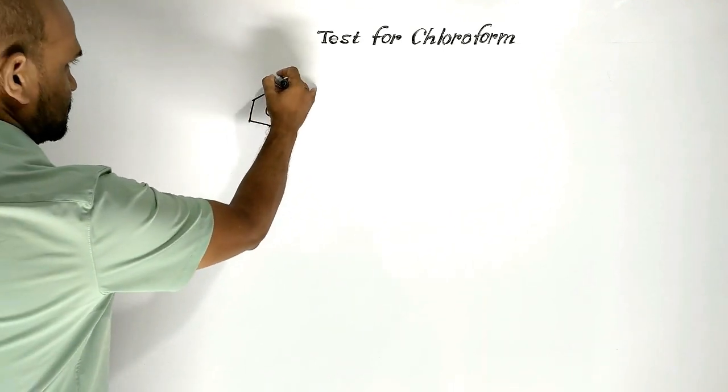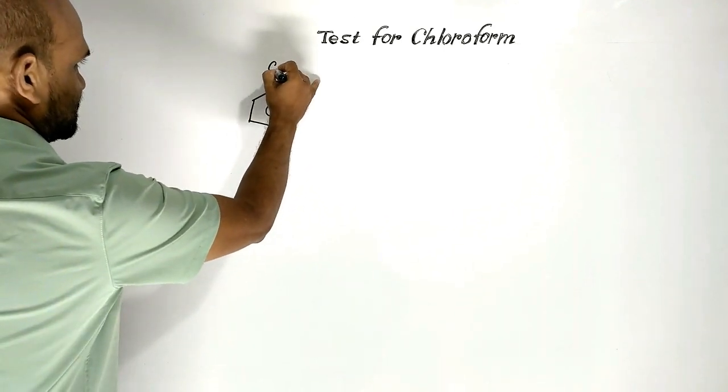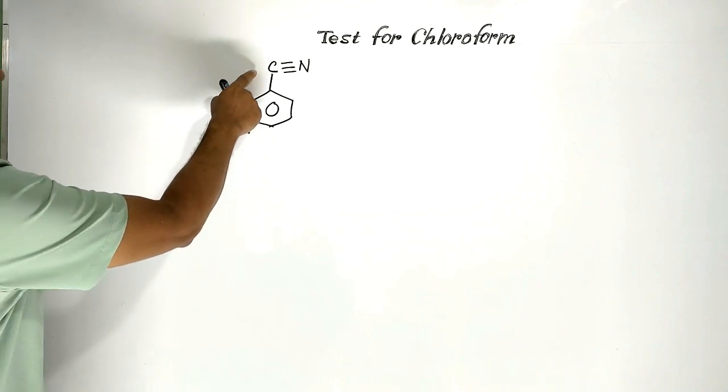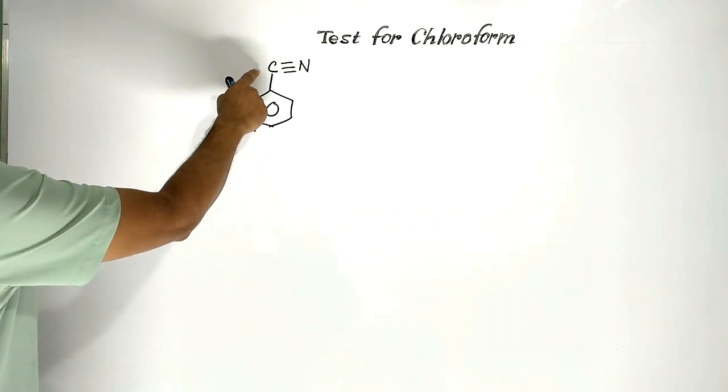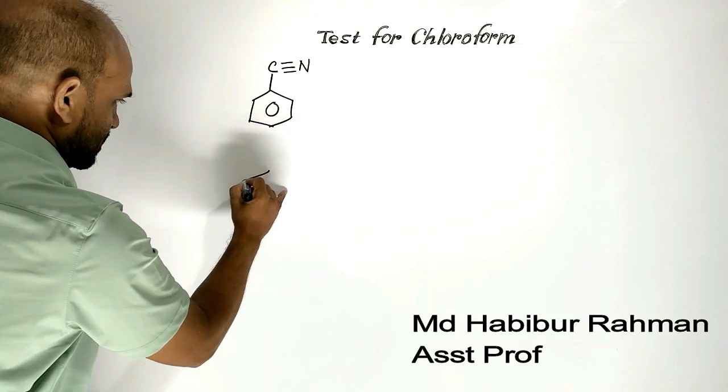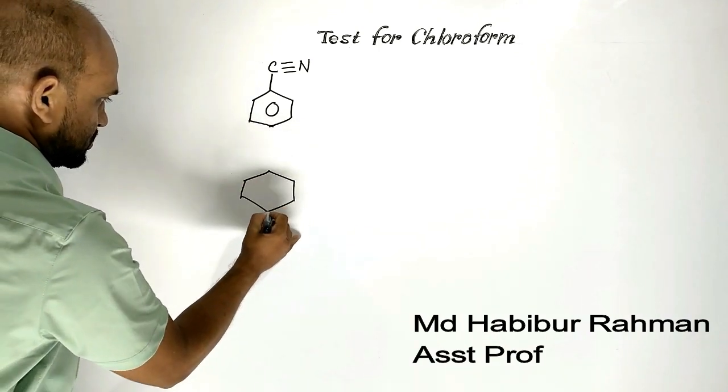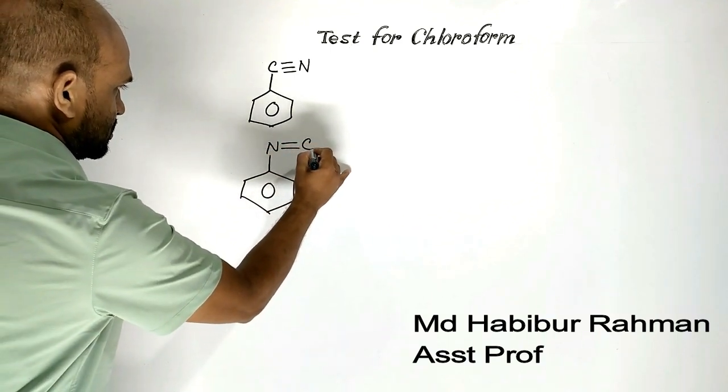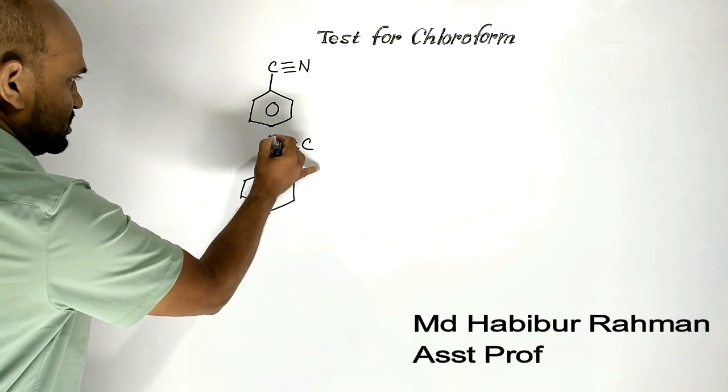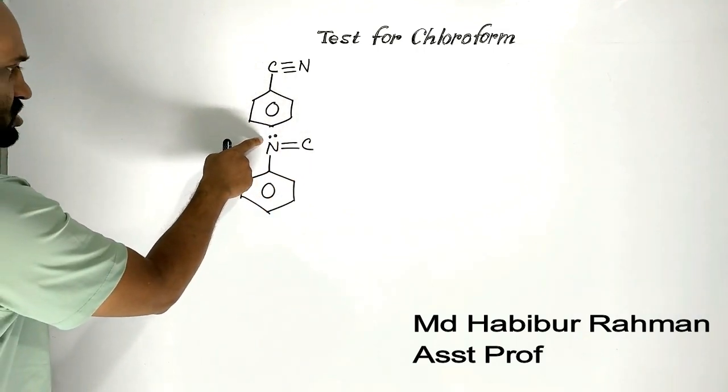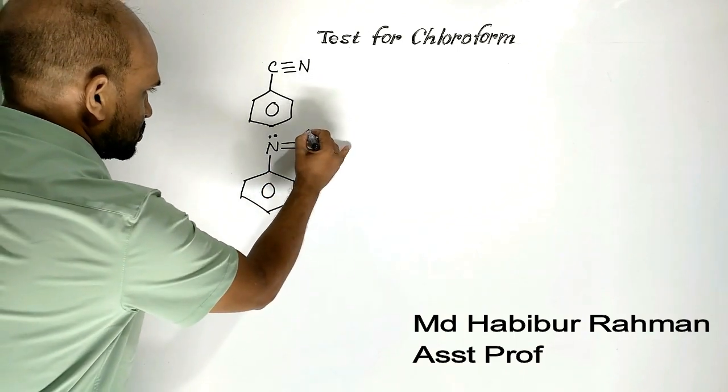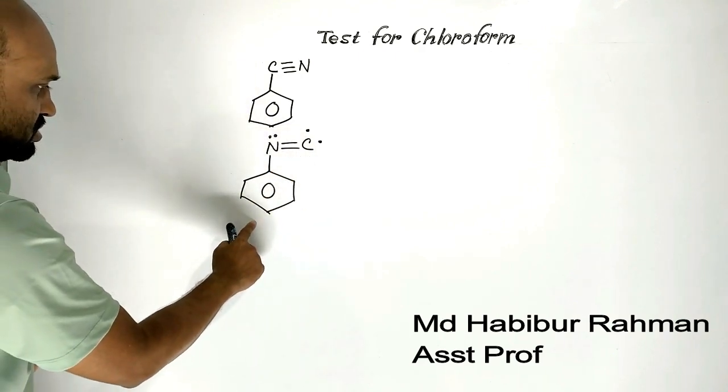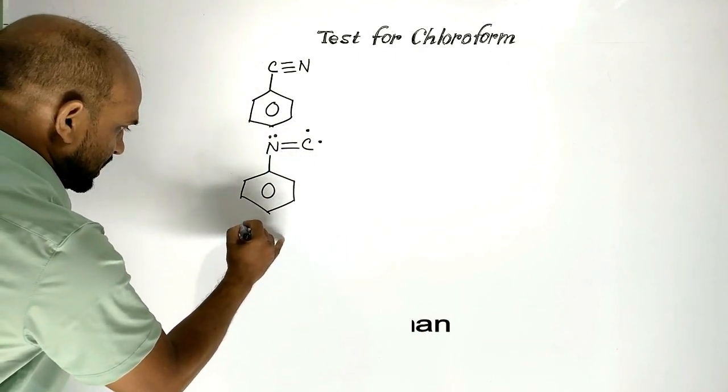This is Benzene. This is Phenylcyanide or Cyanobenzene, another compound in which Nitrogen carries one pair of electrons and Carbon carries two unpaired electrons. Its name is Benzene isocyanide.